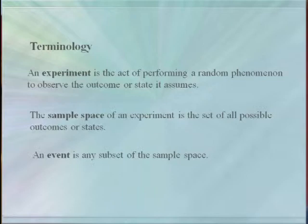There's three basic terms you need to familiarize yourself with in the study of probability. An experiment is the act of performing a random phenomena and observing the outcome. The sample space is the set of all possible outcomes, and an event is any subset of a sample space.